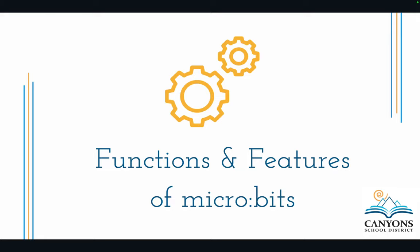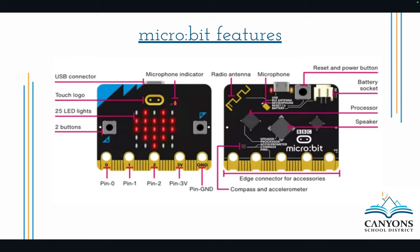Let's look at the functions and features of the micro:bit. Here is the micro:bit, enlarged a little bit. You've got your reset and power button — this is what can reset it if you don't like what it's doing. Your USB connector is how you're going to connect it to a computer or Chromebook in order to get the information from your computer onto that micro:bit.